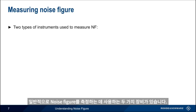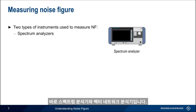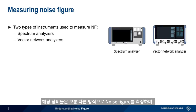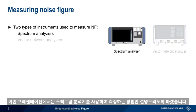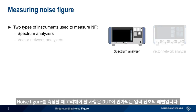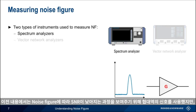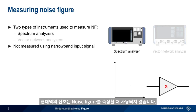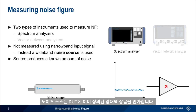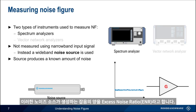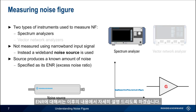Two different types of instruments are commonly used to measure noise figure: spectrum analyzers and vector network analyzers. These instruments usually measure noise figure in different ways, and in this presentation we'll only be covering how noise figure is measured using spectrum analyzers. An important consideration is the input signal. A special device called a noise source is used, which produces a known level of wideband noise as the input signal. The amount of noise produced by this special source is specified in terms of its excess noise ratio, or ENR. We'll discuss ENR in more detail later in this presentation.